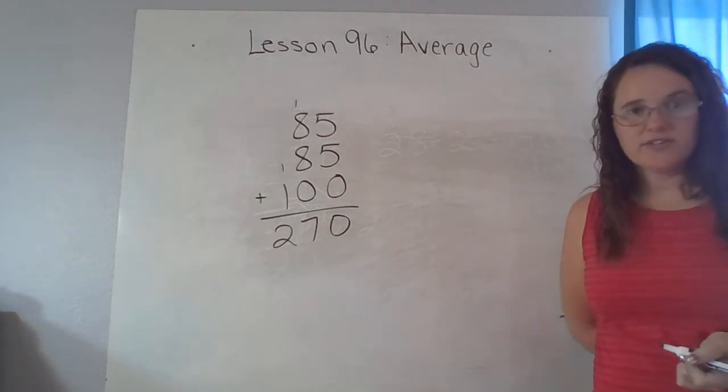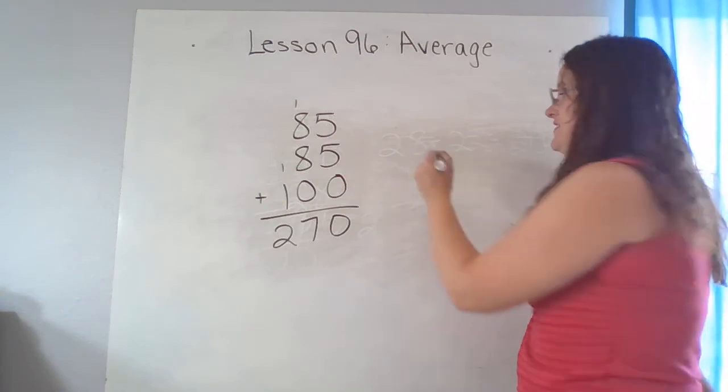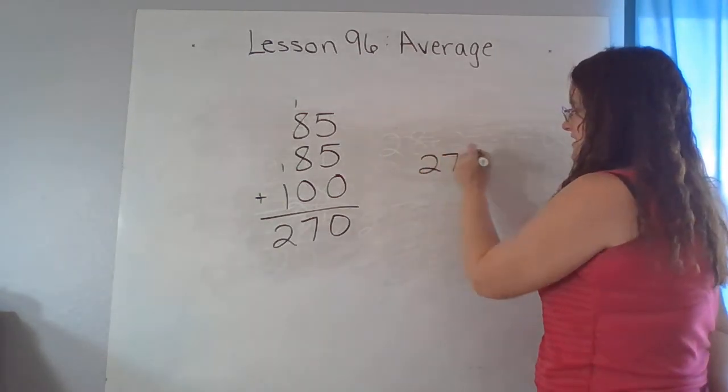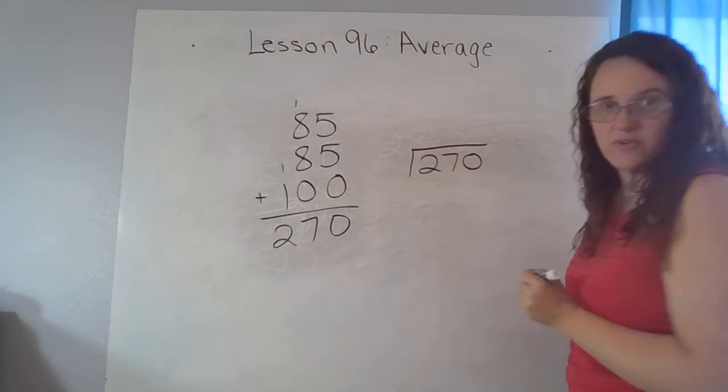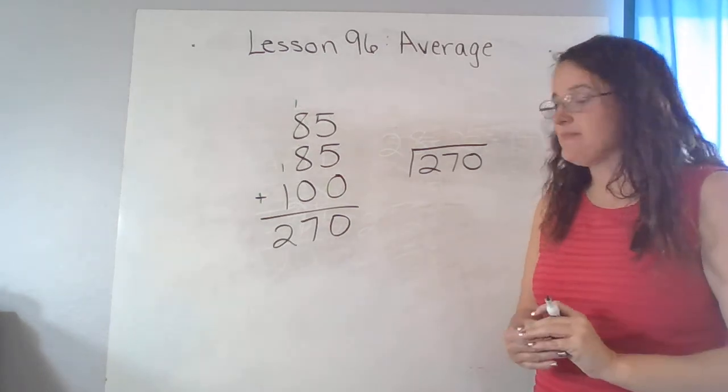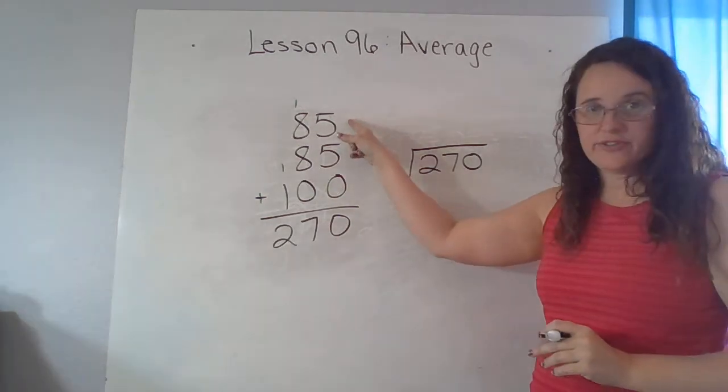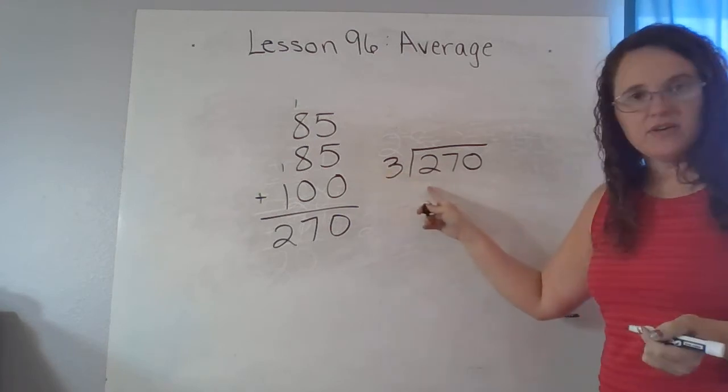So you should have gotten 270. And then to find the average, we have to take that 270. This is kind of a big number. I'm going to put it in the house. And what am I dividing by? However many numbers you added together. So one, two, three.